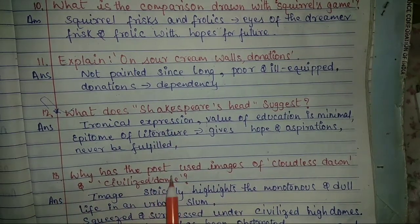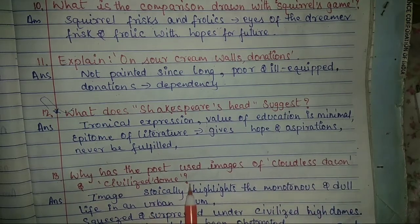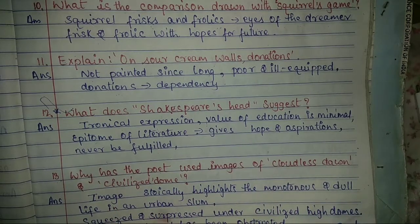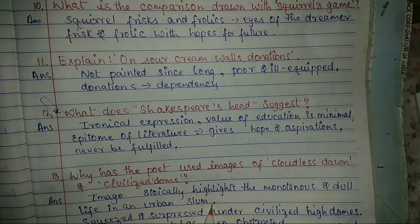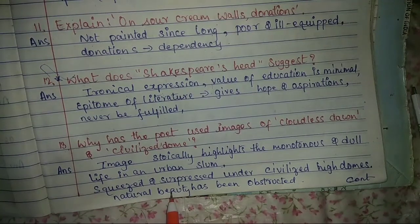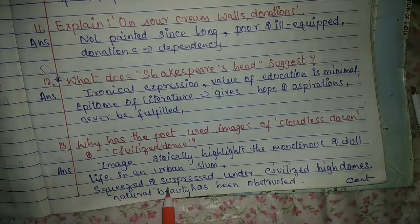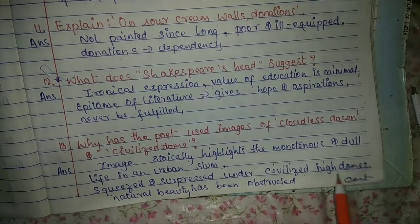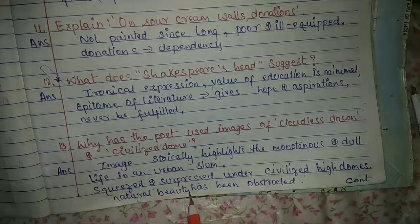Question number 13: Why has the poet used images of cloudless dawn and civilized room? These images starkly highlight the monotonous and dull life in an urban slum. Everybody wants to go to town but cannot lead a desperate life; they are squeezed and suppressed under civilized high domes and are lacking natural beauty.